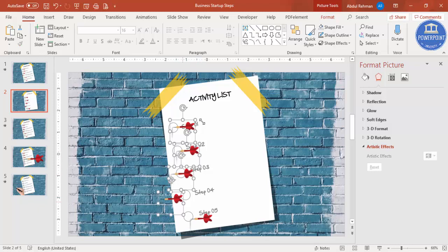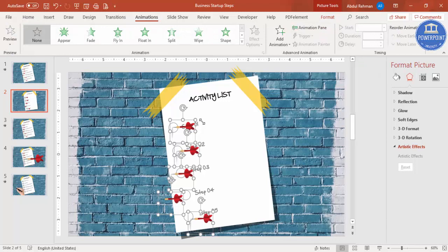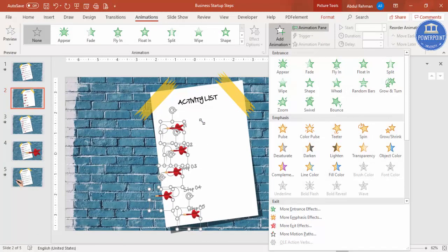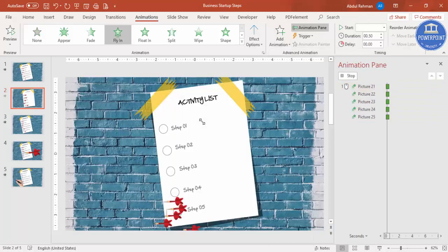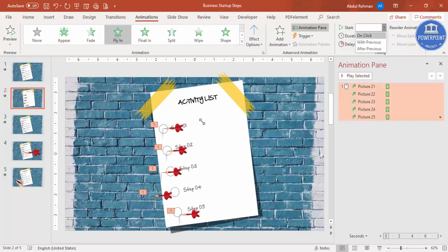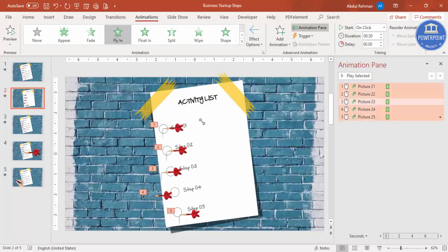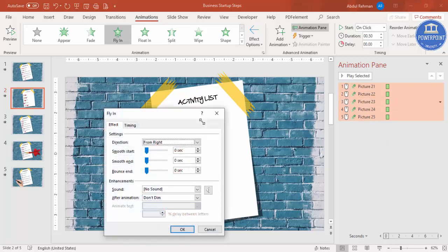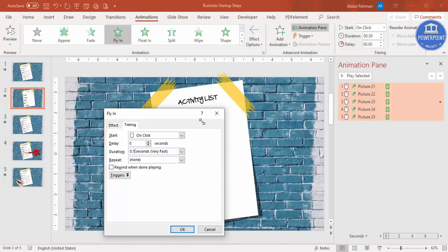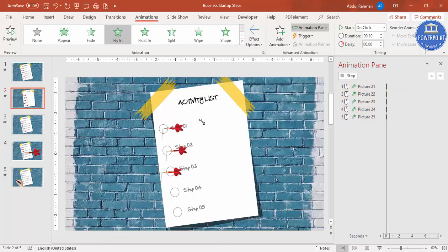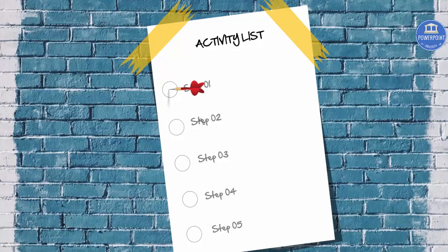Select all the darts and go to Animation. Enable the Animation Pane, click Add Animation, and select Fly In. Set all animations to On Click. In Effect Options, set the direction to From Right. Then right-click, go to Effect Options, select the Timing tab, and set the duration to 0.1 seconds. Now when you play the slide show: Step 1 on target, Step 2 on target, Step 3 missed, Step 4 far from target, Step 5 near target.